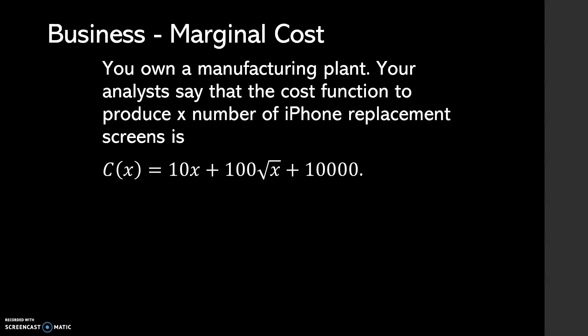I grabbed my calculator. The first calculation is easy: C of zero, meaning the cost to produce zero screens. Let's substitute in zero and see what we get: $10,000. Now that seems crazy that you're not going to do anything and you're going to spend $10,000. But don't forget, you have to pay your employees, keep the electricity going, pay the rent, all sorts of things. Let's put a one in there: the cost to produce one iPhone replacement screen is $10,110. So it costs you $110 to make one screen.